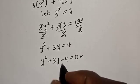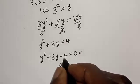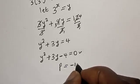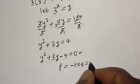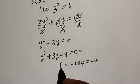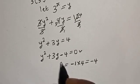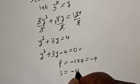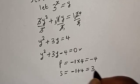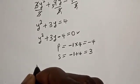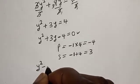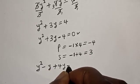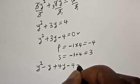The coefficient of y is 3 and the constant is minus 4. We look for two numbers whose product equals minus 4 — that is minus 1 multiplied by 4 equals minus 4 — and whose sum equals 3 — that is minus 1 plus 4 equals 3. Now let's replace: we have y squared minus y plus 4y minus 4 is equal to 0.